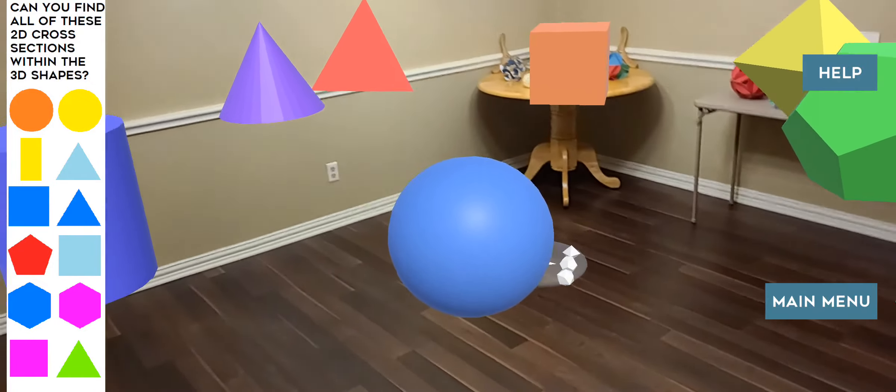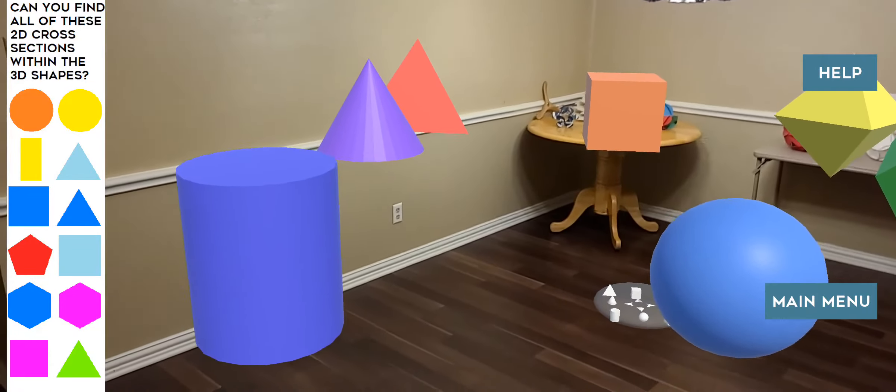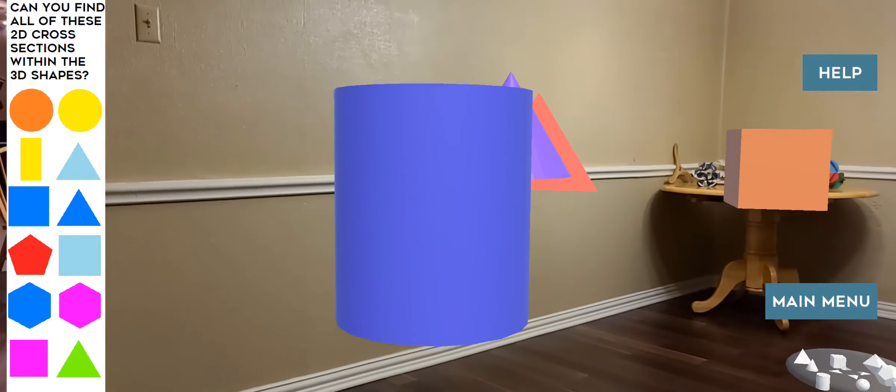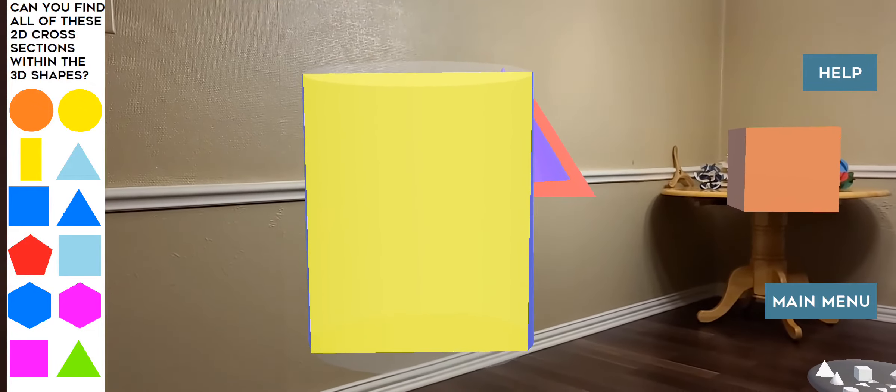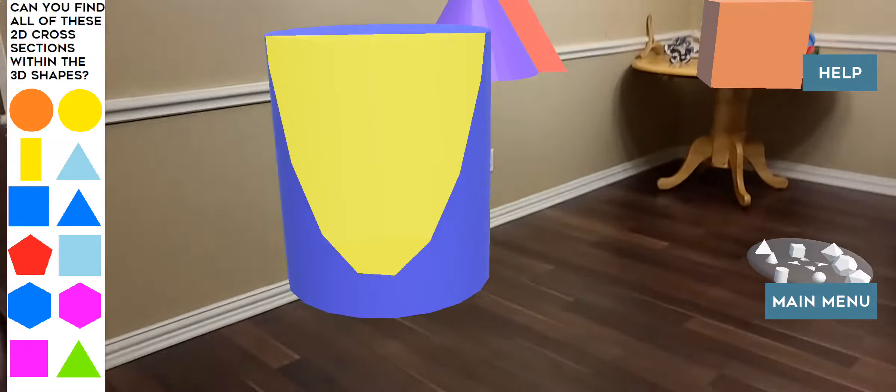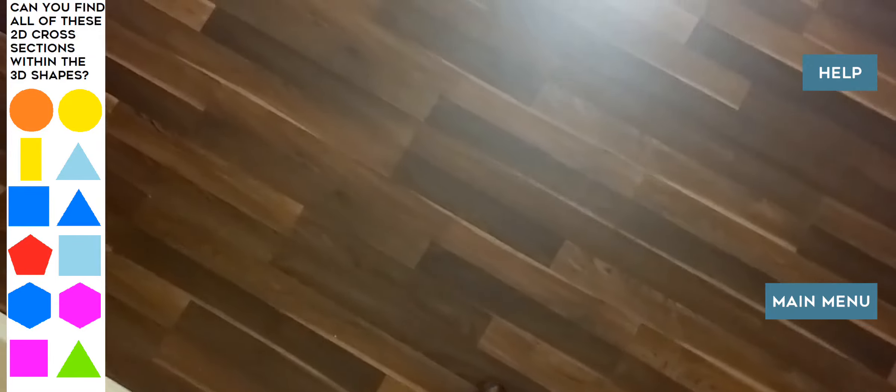Now let's back out and try something else. Okay, this blue one is interesting. We see the cross-section from the side is this yellow rectangle, which is another one of our target shapes. However, from the top, we'll notice that it looks like a circle.